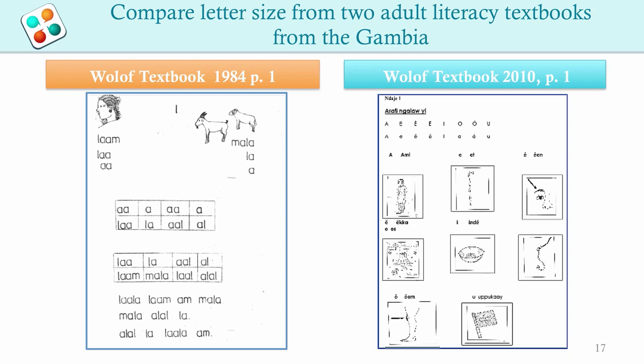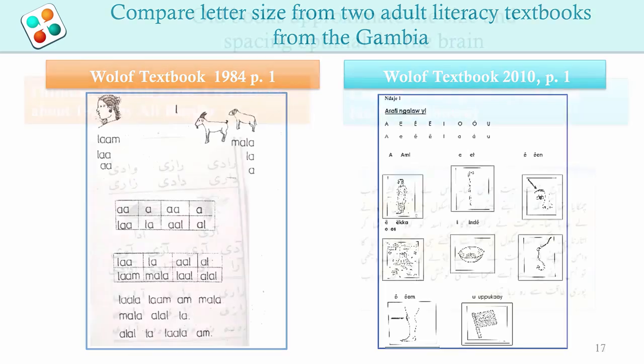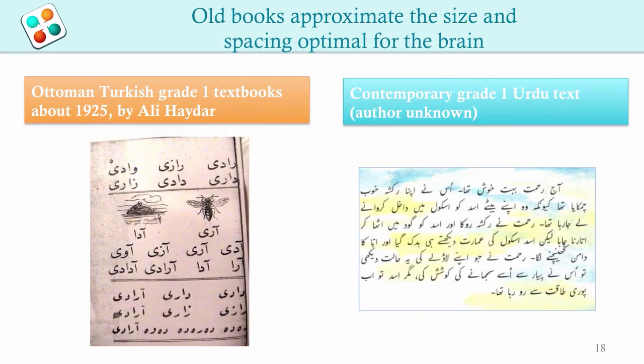Based on what you have learned so far, which of the two books will help beginners read faster? Also note the look-and-say method of the 2010 book. Given your experience in Module 2, would adults easily remember word shapes from pictures? This example compares Turkish in the Arabic script from the Ottoman Empire to contemporary Urdu from Pakistan. Old books may more closely approximate the size and spacing optimal for the brain. If you wanted to learn how to read the Arabic script, which book would you prefer to use?